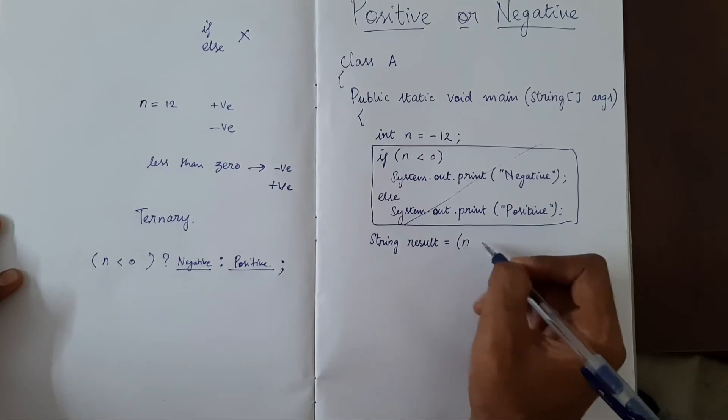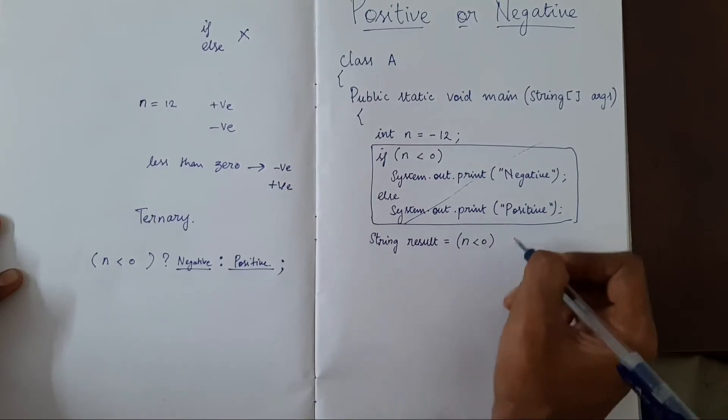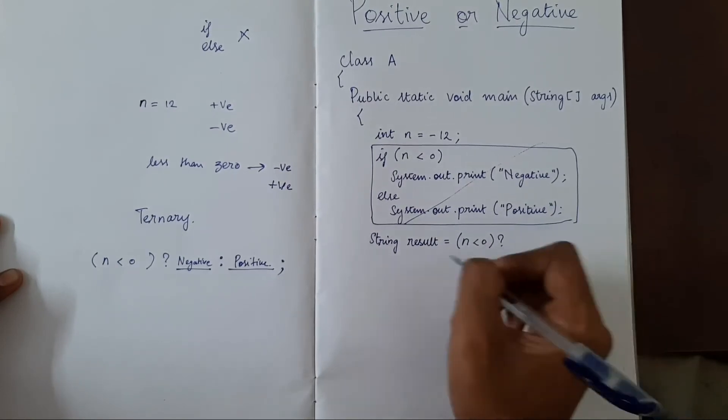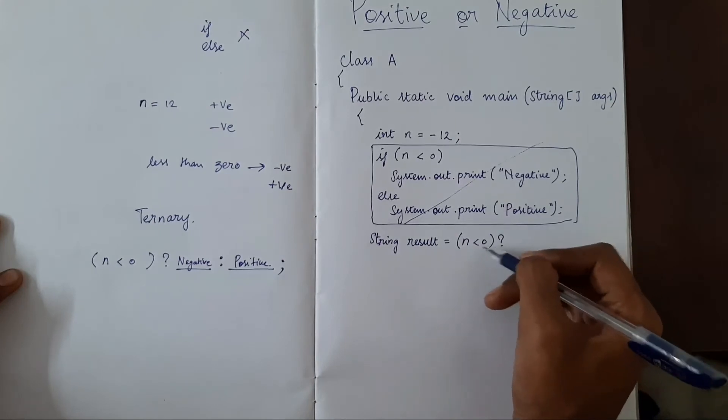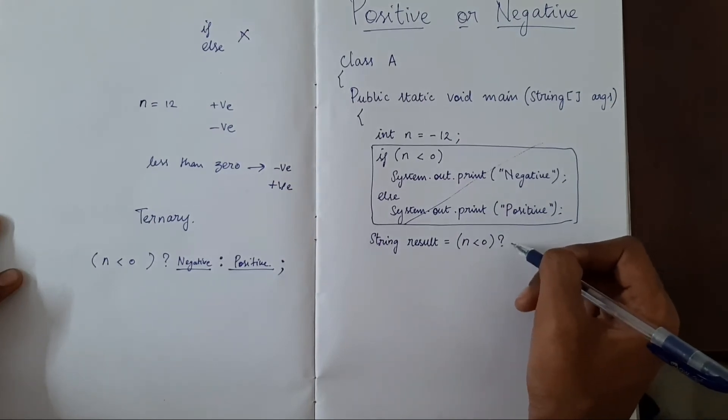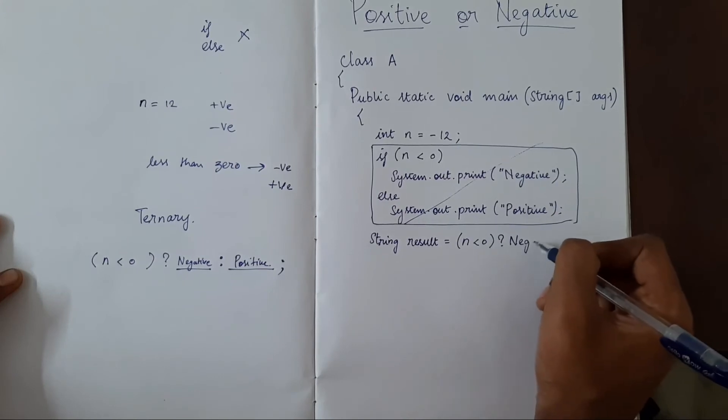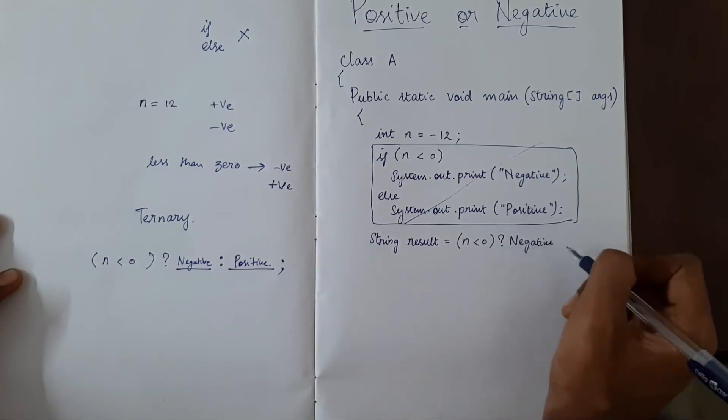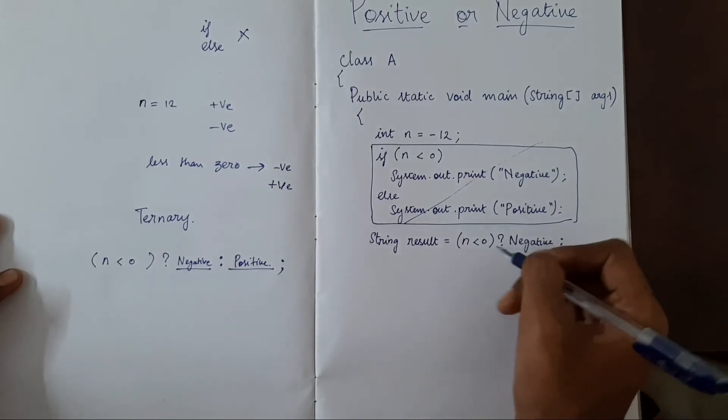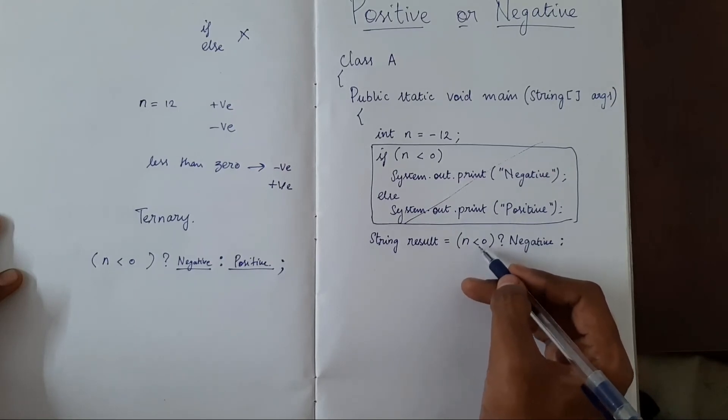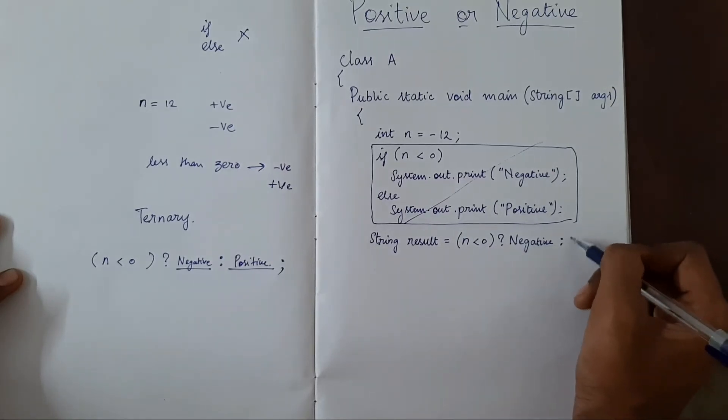if n is less than 0 - it's a question. If it is less than 0, what is the true value? It is negative. What if it is false? What if n is greater than or equal to 0? It means positive.